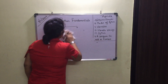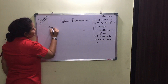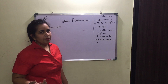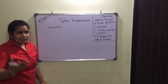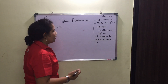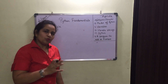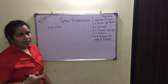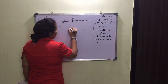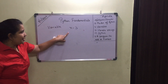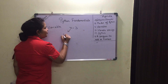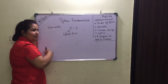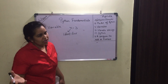The next topic is variables. A variable is basically an identifier we use to store different types of data in Python — it may be integer, float, or string. We have to give some identity to that data. The name given to the stored data is known as a variable or identifier. For example, if we write x = 3, x is the identifier, and wherever we use x in the program, x means 3.